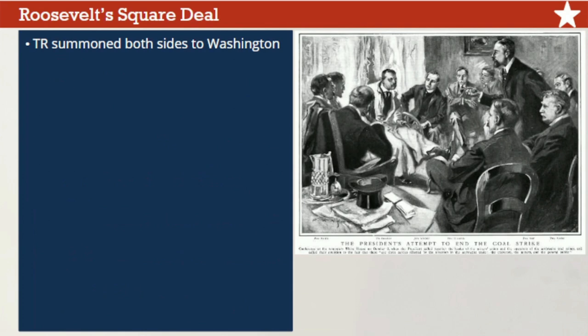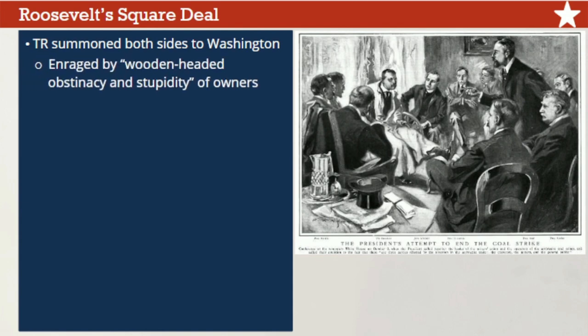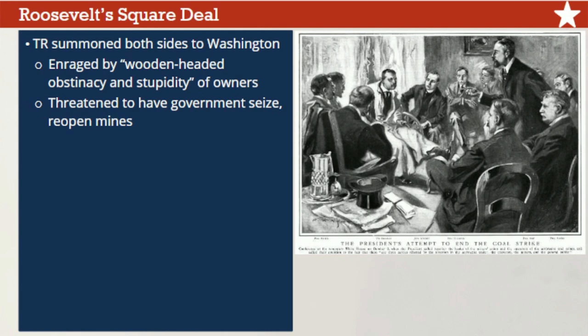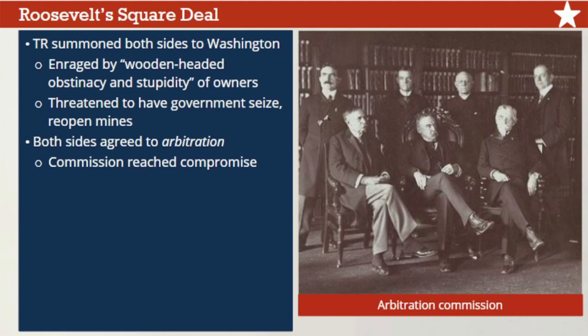Theodore Roosevelt decided to resolve the dispute personally and requested that leaders of both sides come to Washington, D.C. Although frustrated with both labor and management, he was especially enraged by what he called the 'wooden-headed obstinacy and stupidity of the mine owners,' and said he wanted to chuck their spokesman out a window. He even threatened to have the government seize the mines and reopen them with federal troops supplying the labor. Ultimately both sides agreed to arbitration, in which a commission of outside experts reached a compromise. The miners won some of their demands, and the coal mines reopened in time for winter.